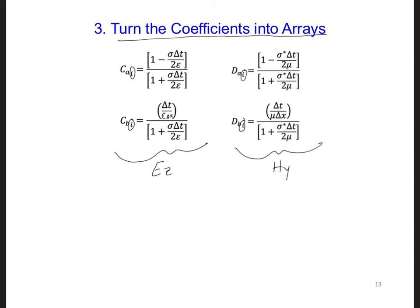These equations show the new coefficients that we developed last time. Since we're currently modeling free space in the rest of the grid outside of the PML, in air, in the free space region, sigma and sigma star, we can just have those equal to zero outside of the PML.